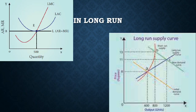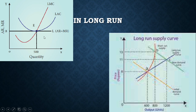In the long run, the supply curve is where LMC and LAC intersect at one point. The quantity where AR equals MR satisfies the long run equilibrium condition. In perfect competition, the long run equilibrium results in normal profit at that same stage.